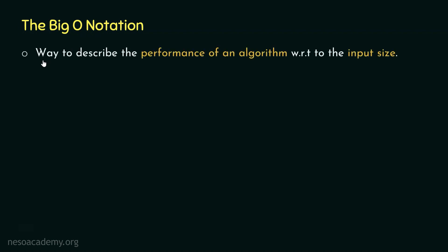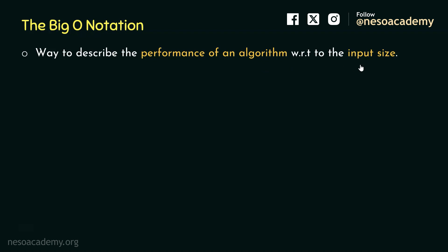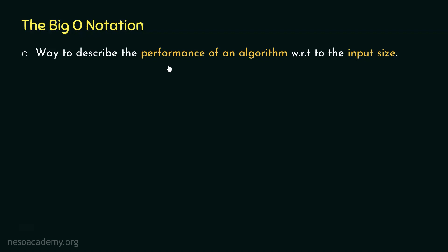What is Big O notation? Big O notation is the way to describe the performance of an algorithm with respect to the input size. This means Big O notation tells how fast an algorithm is or how much memory space it takes with respect to the input size. Performance is measured in two terms: one is time and the other one is memory space.